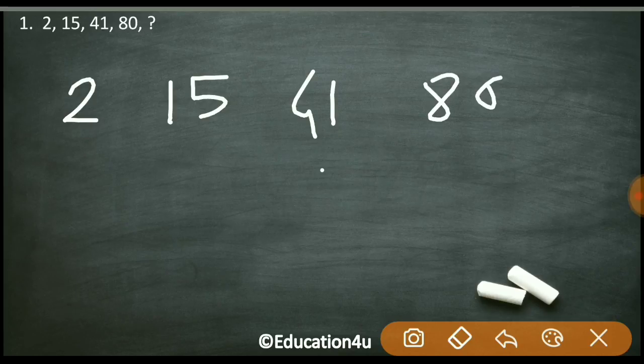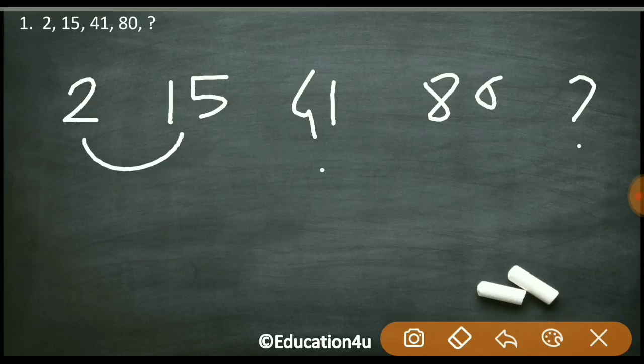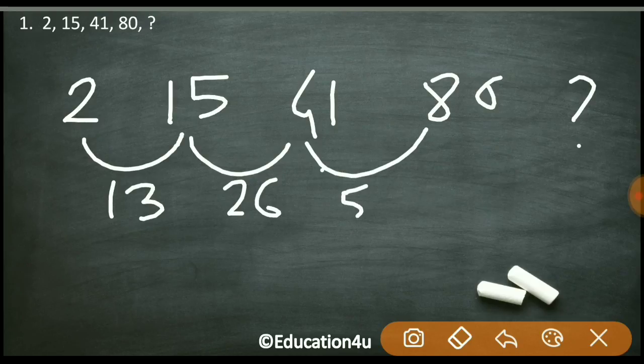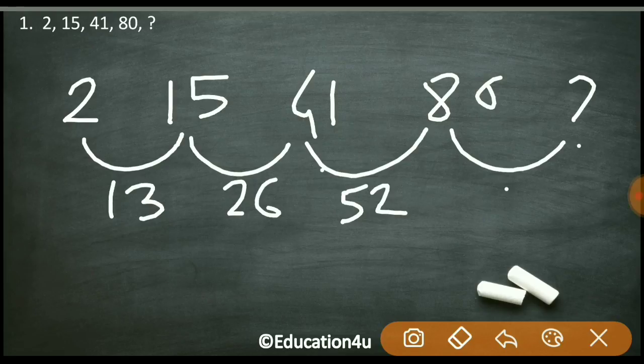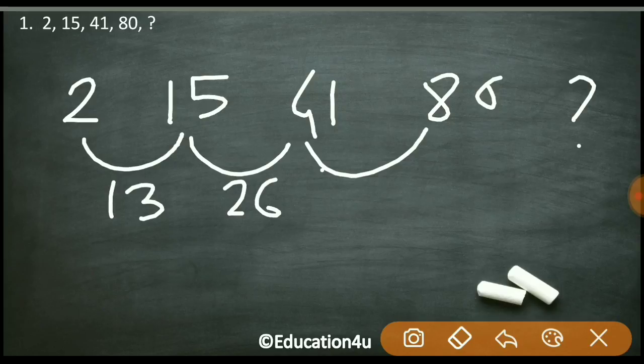So coming to the question, the question is a series: 2, 15, 41, 80, and the next number is? Actually the question is - let me write the question properly. The series is 2, 15, 41, 80, and what is the next number?